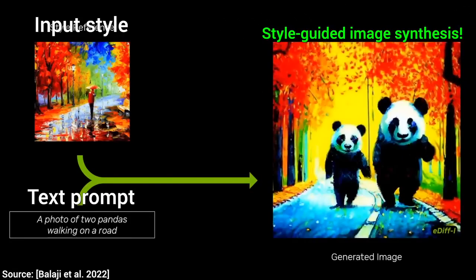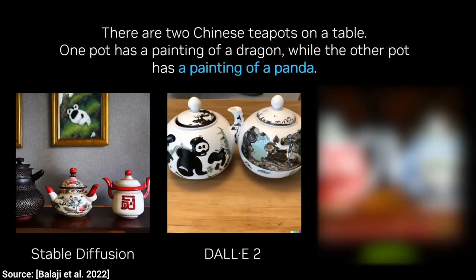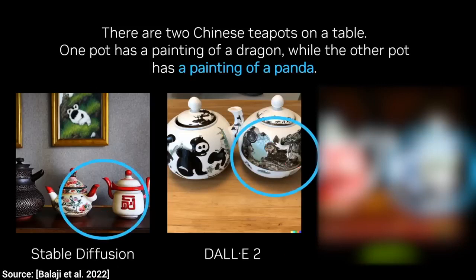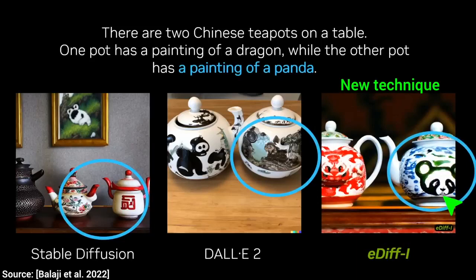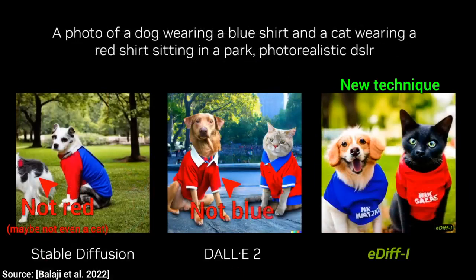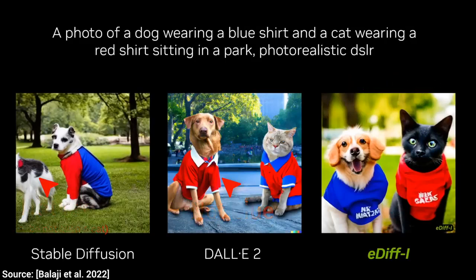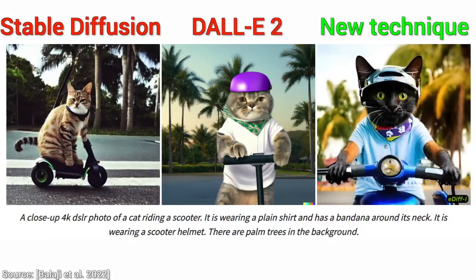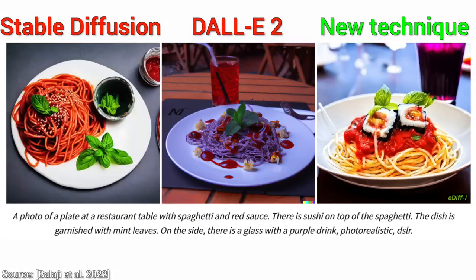Three, so how does it compare to the usual suspects? Let's have a look at some teapots. To the surprise of no one, Stable Diffusion and DALL-E 2 are both capable of this task. However, look — we did not get a painting of a panda. And with the new technique, look at that! It follows our instructions better. Note that text-to-image AIs are not easy to evaluate, as all models can generate a ton of different images for the same prompt. However, further comparisons reveal that there indeed is a pattern here. I keep saying that this new technique follows our instructions better, so here is the most important question.